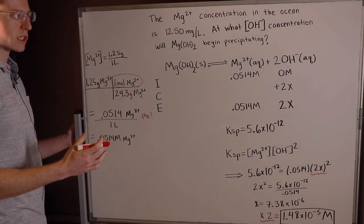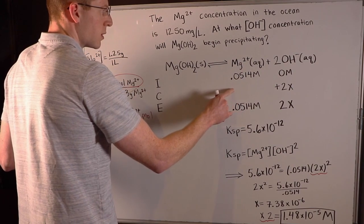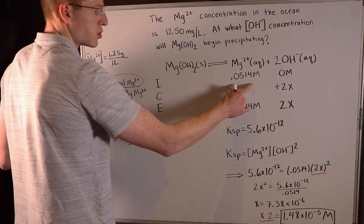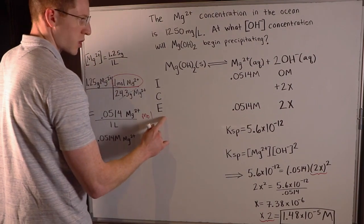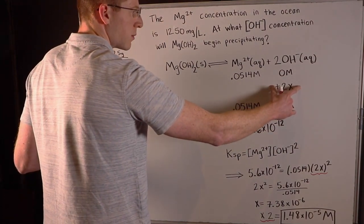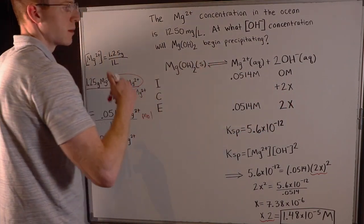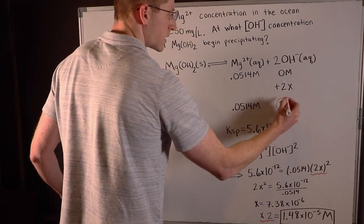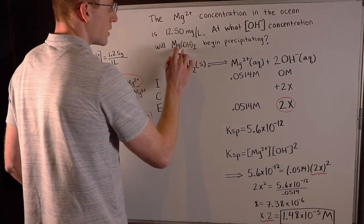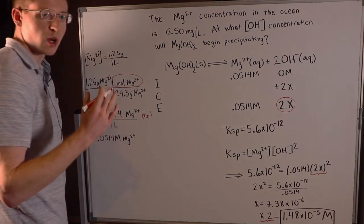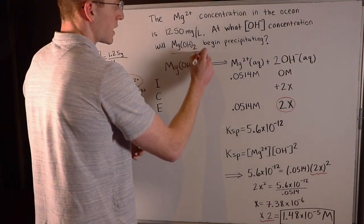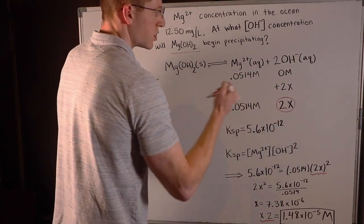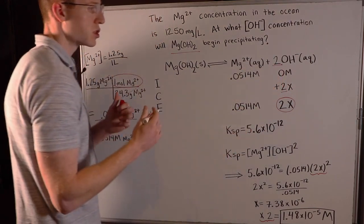There was no additional magnesium added, so the magnesium concentration stays at 0.0514 molar as its equilibrium concentration. For hydroxide, we're adding some unknown X amount — that's what we're trying to find. So the equilibrium concentration of hydroxide is 2X, which is the threshold concentration at which magnesium hydroxide begins precipitating. The KSP expression is the concentration of Mg²⁺ times the concentration of OH⁻ squared, because of the stoichiometric coefficient of 2 in front of hydroxide.